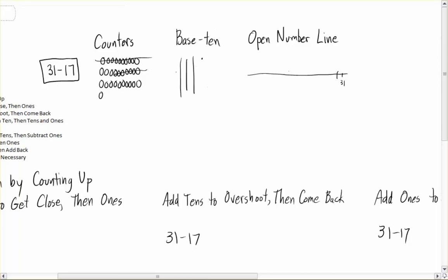Base 10 model, a little more sophisticated, a little easier because we can just use our models for 10, here sticks. But we have to know that if I'm going to take away 17, I can take away one of these sticks, but now I'm going to have to trade in a stick for 10 dots to take away my 7 dots.